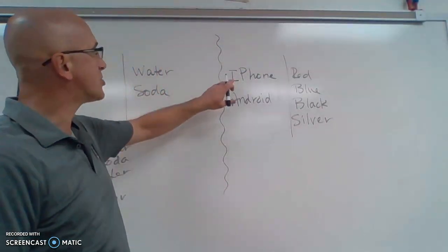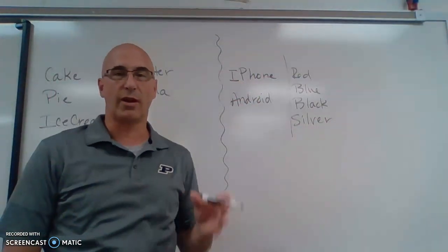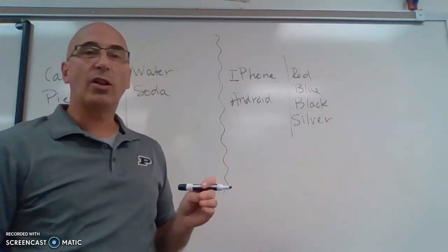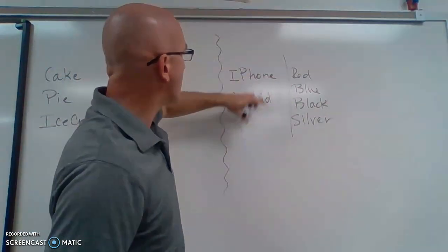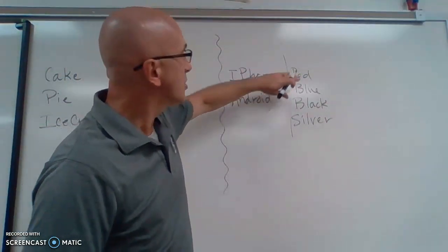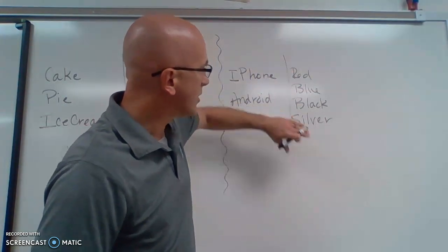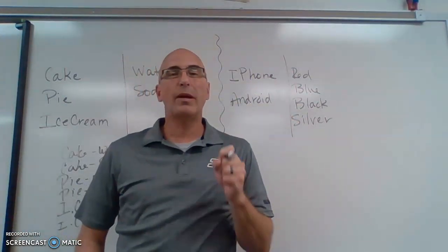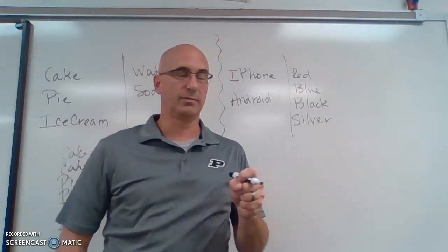Let's look at another experiment. Say you had a choice to get a new iPhone or a new Android phone, and the colors you could choose — no matter what phone you chose — were red, blue, black, or silver. So how many possible outcomes are there?